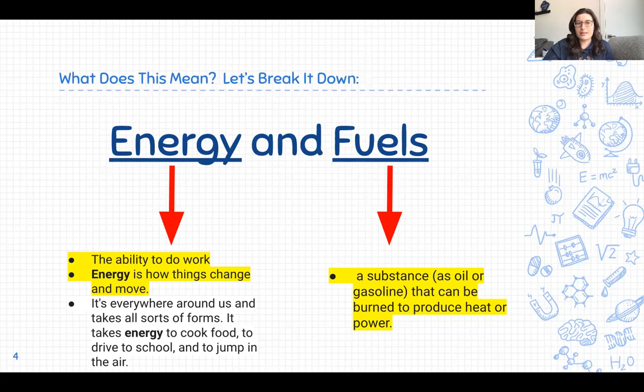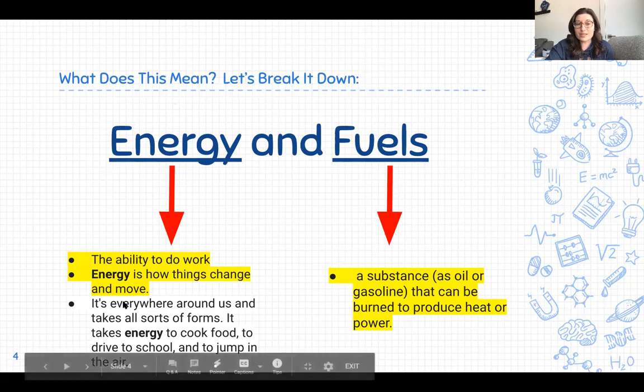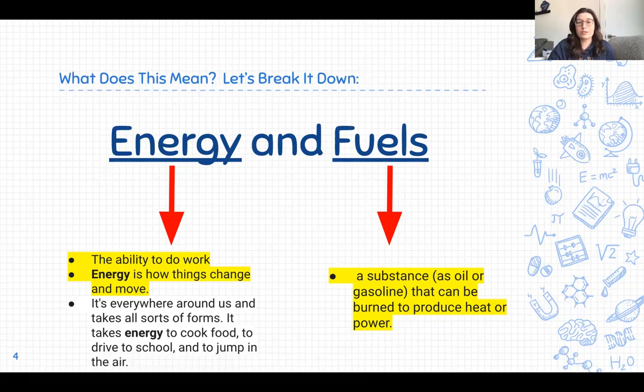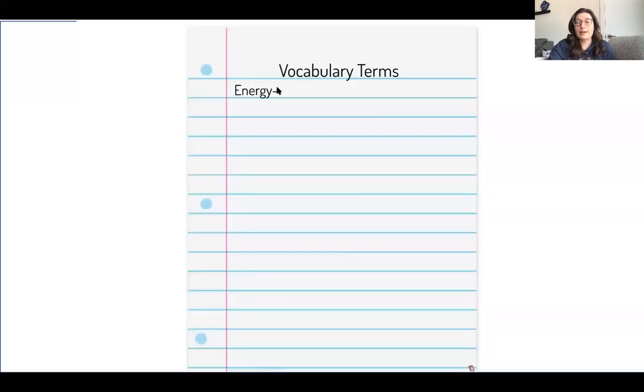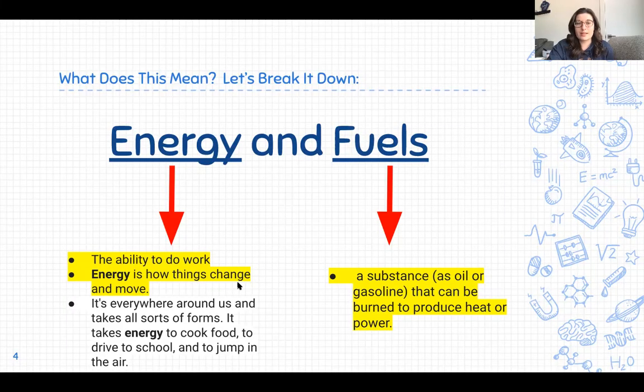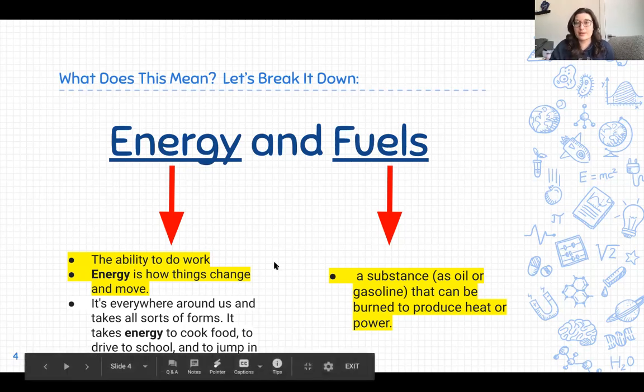So this title, what does it mean? The word energy. It's the ability to do work. Energy is how things change and move. Energy is everywhere around us, and it takes all sorts of forms. It takes energy to cook food, to drive to school, and to jump in the air. The two bullet points that are highlighted in yellow, these words are what I would like you to write right after the dash for the definition. So the terms in yellow, I'd like you to write on your notebook page now. Pause the video to write the two bullet points in yellow on your notebook.